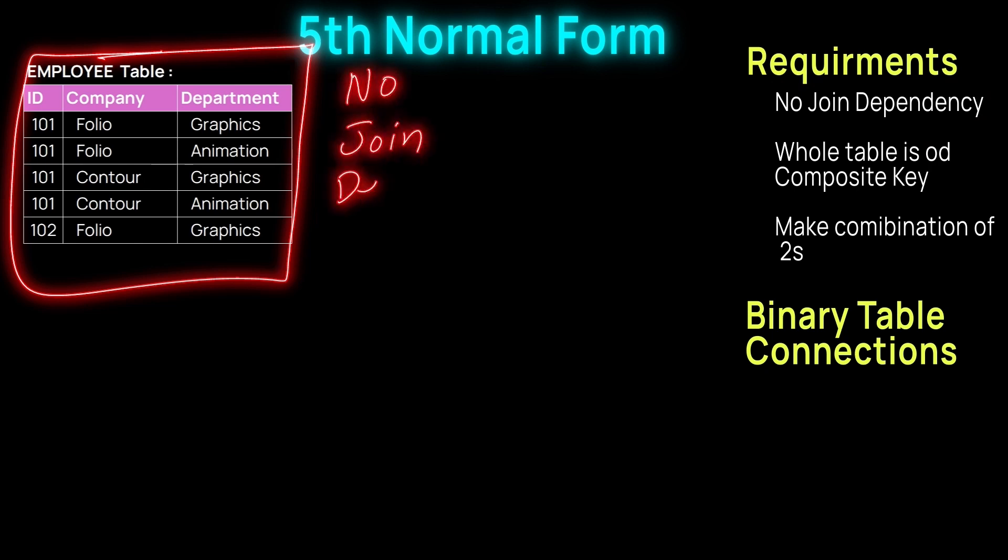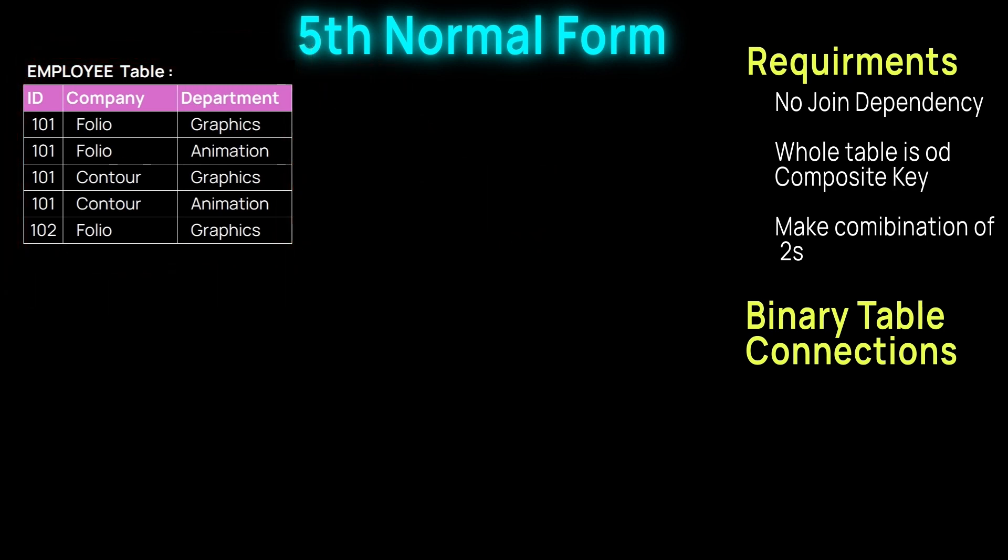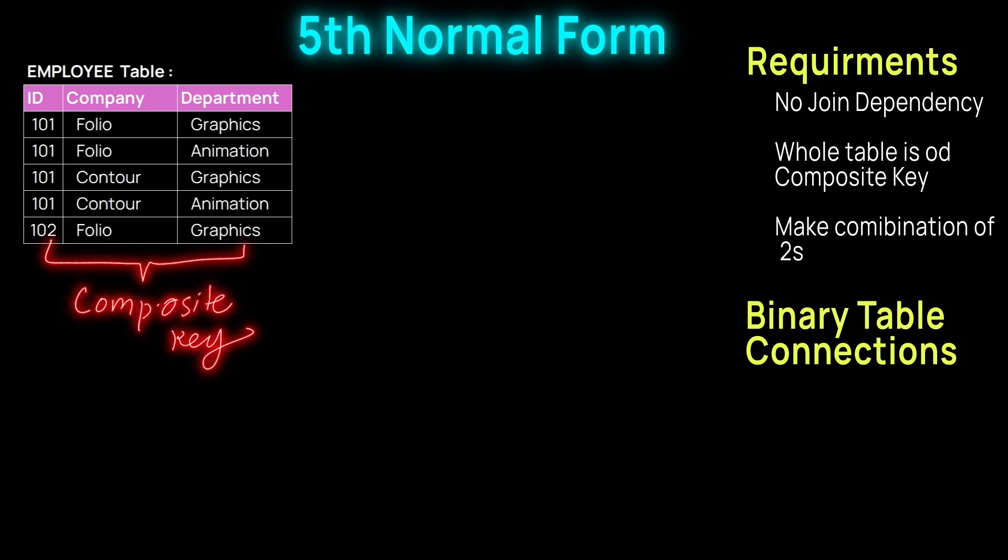The other condition is the whole table must be a composite key. Composite key means the combination of all the columns make it a primary key of the table, which is a unique identifier. So the combination makes it a unique identifier.